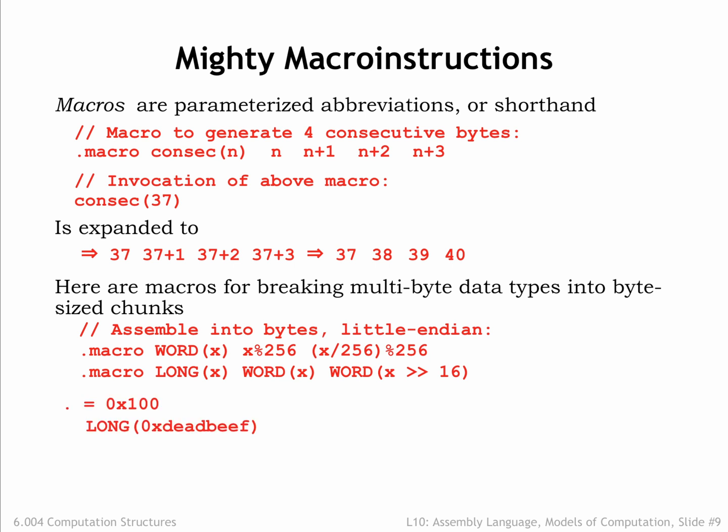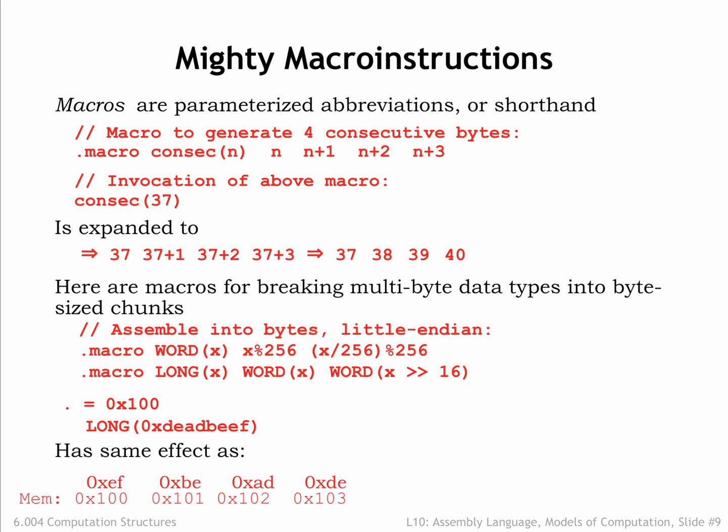These two UASM statements cause the constant hex deadbeef to be converted to 4 bytes, which are then deposited in the output array starting at index 0x100. Note that the beta expects the least significant byte of a multibyte value to be stored at the lowest byte address.